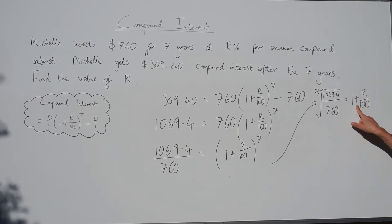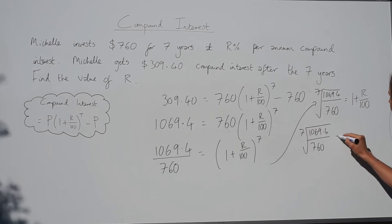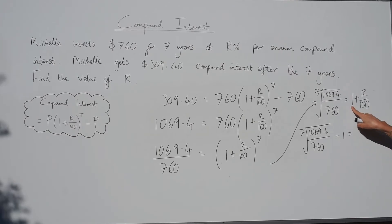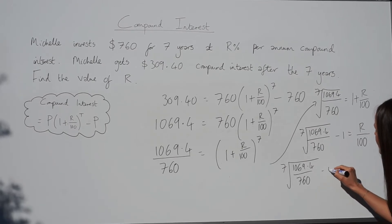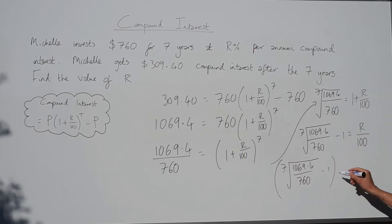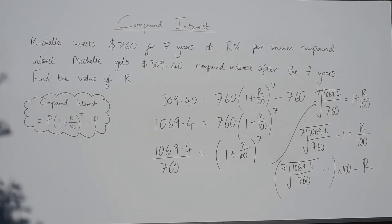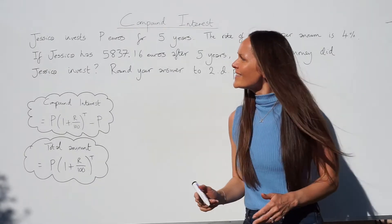Next, the opposite of adding 1 is to subtract 1 from both sides — making sure the subtraction is outside the root on the left. On the right, the 1 goes to 0, leaving r/100. The opposite of dividing by 100 is to multiply by 100, so multiply everything by 100. The right-hand side cancels to give r. Putting all of that into the calculator gives r equals 5, so the rate of interest is 5 percent.